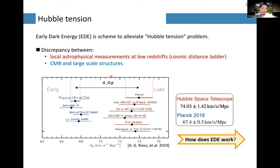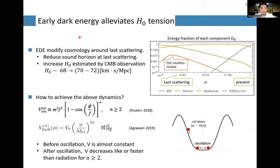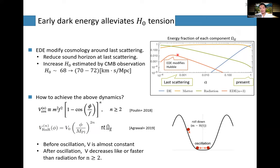To alleviate or resolve this tension, the early dark energy model was considered. Early dark energy is a new degree of freedom in cosmology. The x-axis is the scale factor evolution — here's the present point, and here is recombination at around redshift 1100. We usually consider dark energy, radiation, and dark matter as three components. On top of that, we can add early dark energy — a new degree of freedom that affects cosmic expansion only around recombination, and then decays.